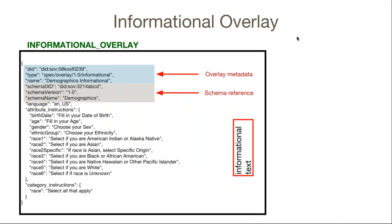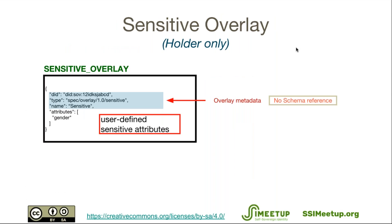The informational overlay is for instructional or informational text — it could be legal prose snippets or service hints. If you wanted a different language, you could create a German informational overlay, or whatever you want. The reason for all of these overlays is so that the base schema remains in its absolute simplest form. Everything you're seeing here is just layered on top of that schema and it's not affecting the data capture.